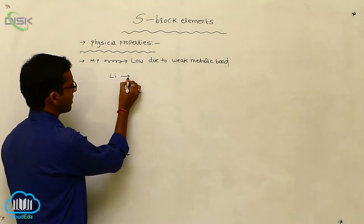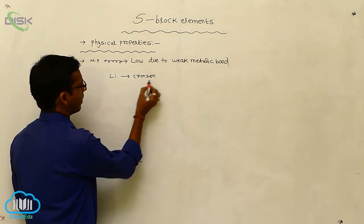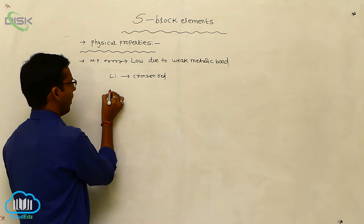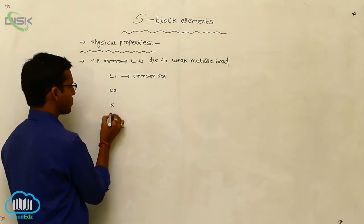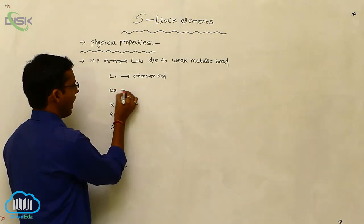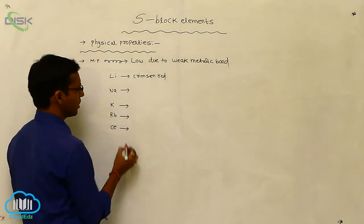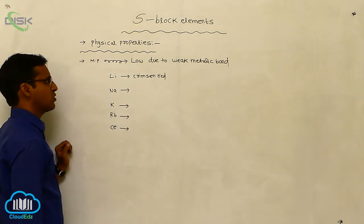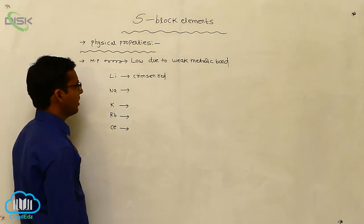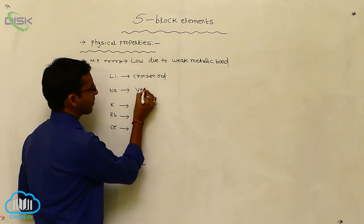Generally, lithium metal appears as crimson red color. Next, regarding sodium, potassium, rubidium, and cesium — francium is unstable so there is no practical use for its color property. Sodium appears as yellow color.